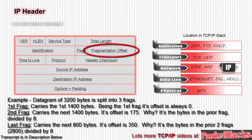Here's an example: a datagram of 3,200 bytes is split into three fragments. The first fragment carries the first 1,400 bytes; being the first fragment, its offset is zero. The second fragment carries the next 1,400 bytes; its offset is 175, because the bytes of the prior fragment are divided by 8. The last fragment carries 800 bytes; its offset is 350, which is 2,800 divided by 8.